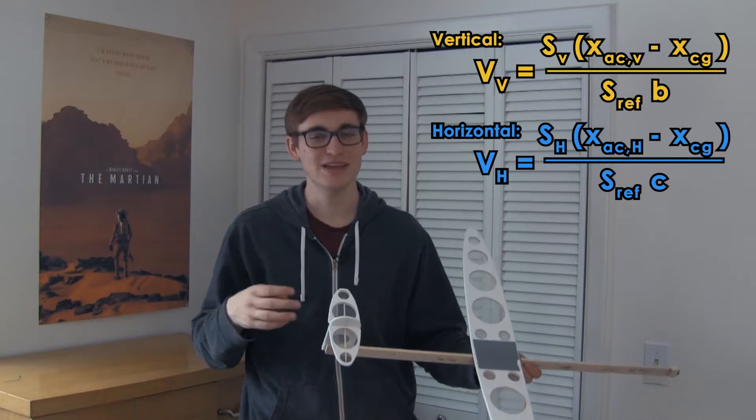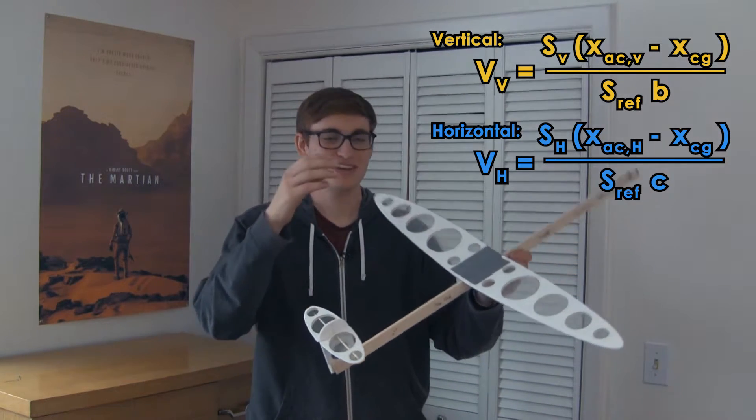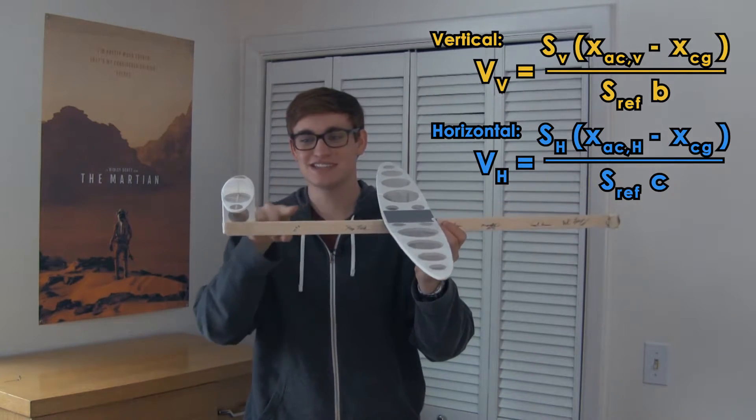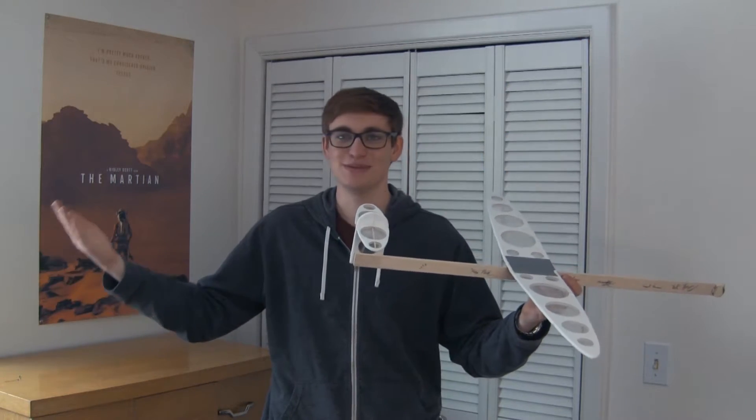So there's an equation that gives you something called a coefficient of volume for your vertical and your horizontal tail. I guess it's two equations. But essentially, it tells you how big it is in comparison to the size of your wing and also accounts for the distance between them, because obviously the further back your tail is, the smaller it needs to be to give you control.